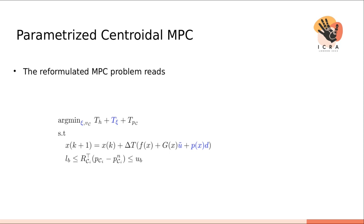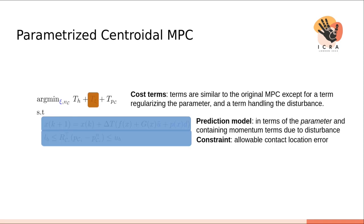We reformulated the problem using the parameter as the optimization variable. The prediction model includes the effects of the payload highlighted in blue on the centroidal momentum. We have only the maximum allowable contact location error constraints and we have a specific cost term that attenuates the disturbance while regularizing the parameter, thus ensuring that the contact forces at the feet are in the interior of the friction cone.